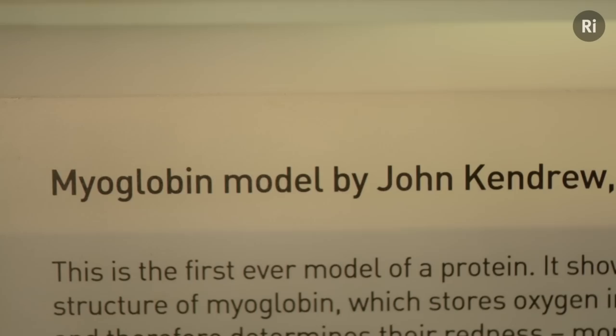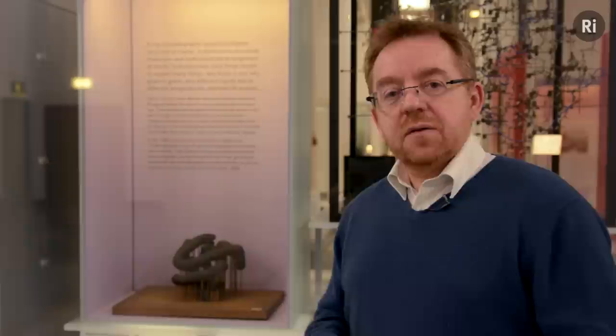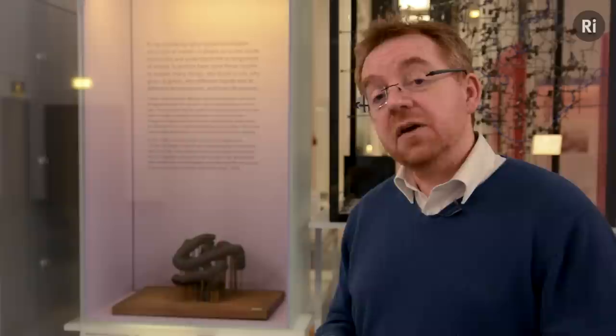The model was built in 1958 by John Kendrew, using information collected by firing X-rays at crystals of sperm whale myoglobin. By measuring the pattern of spots generated as the myoglobin crystals scattered the X-rays into many different directions, he was able to calculate the structure of the molecule.